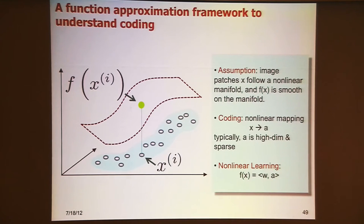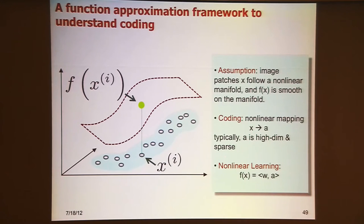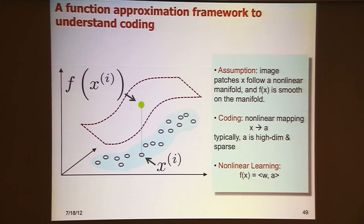We build a framework to motivate and understand the coding methods — from a functional approximation framework. Those are data points that you want to encode. Your purpose is to learn a non-linear function in this input space. You do coding, which is a non-linear mapping, to map the data to a new feature space. In this new feature space, the representation is typically higher-dimensional and sparse. Then you apply a linear model on this new feature vector, which is actually a non-linear function on the original input X.